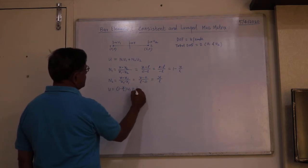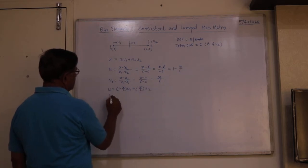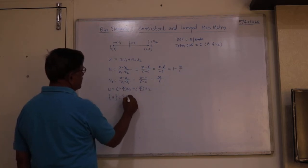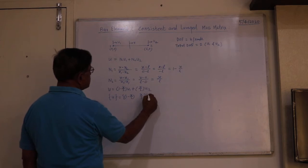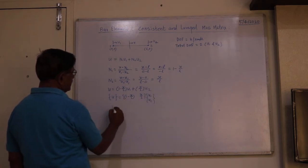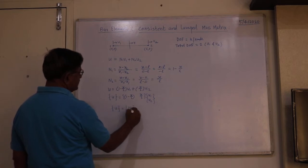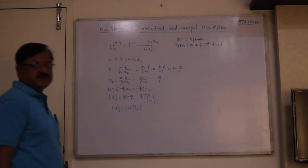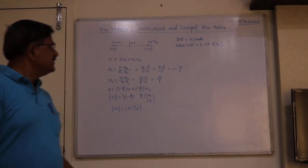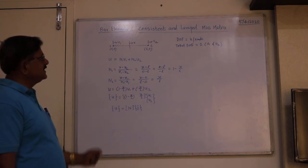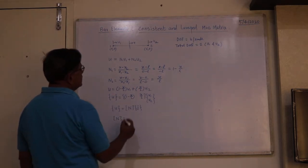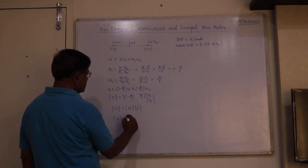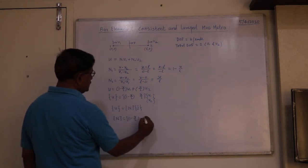So the displacement function becomes U = N1·U1 + N2·U2. In matrix form this is written as [1 − x/L, x/L] multiplied by {U1, U2}. In symbolic form U = [N]·{δ}, where [N] is the shape function matrix equal to [1 − x/L, x/L].